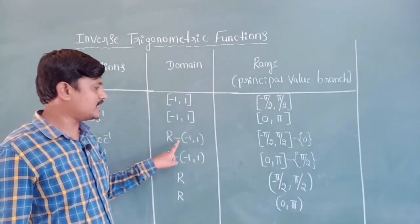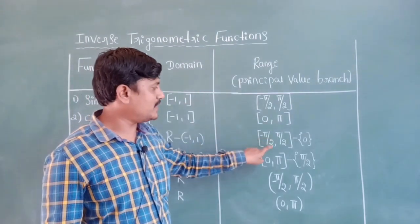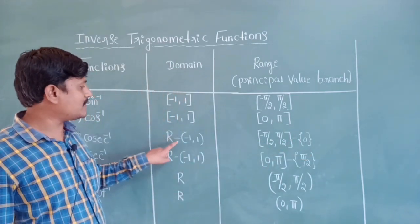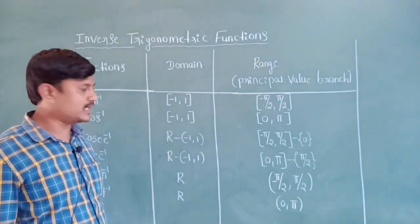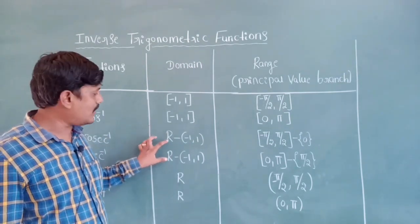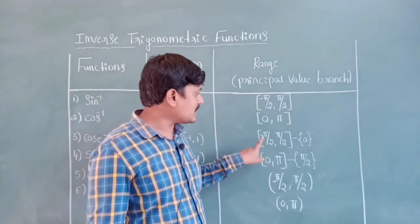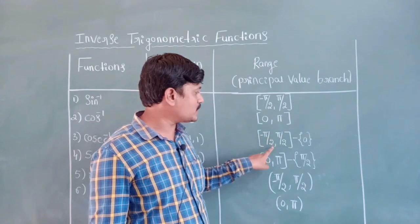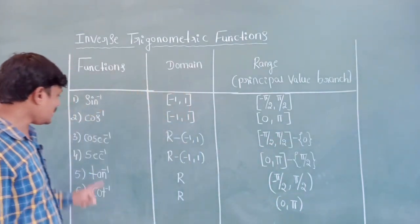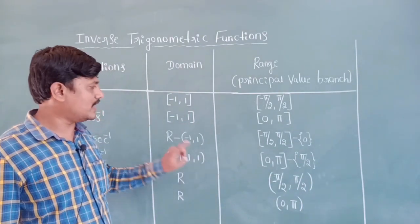Next, cosec inverse: domain is R minus {minus one, one}, meaning all real numbers except minus one and one. Range is minus pi by two to pi by two, excluding zero. Here R means all real numbers. We also consider minus pi by two to pi by two value except zero.